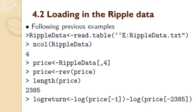Once you've done this, you know that the last observation of the price is the 2385th entry. The log return is calculated as the difference of the log of the price with the first observation excluded, minus the log of the price with the last observation excluded. Same rhyme, reason, and rationale as before — make sure the read.table command is working with the right file path.